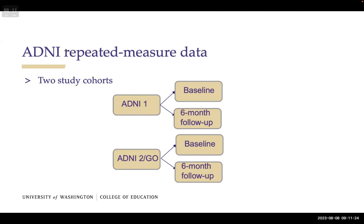We are dealing with repeated measure data. Under ADNI-1 we have baseline and six-month follow-up, and under ADNI-2/GO we also have baseline and six-month follow-up. While ADNI actually collects follow-up data up to three years, for this research question we focus only on baseline and six-month follow-up. The rationale is that we want to use the repeat measure data to quantify learning effects, and from a drug compliance perspective, six months is a practical period to identify patients at highest risk of conversion.